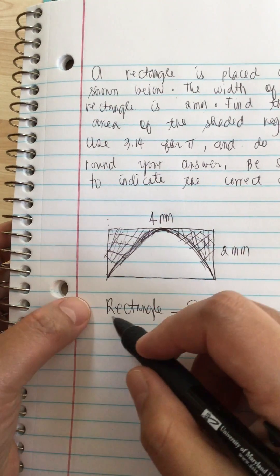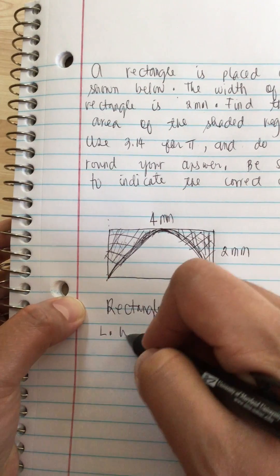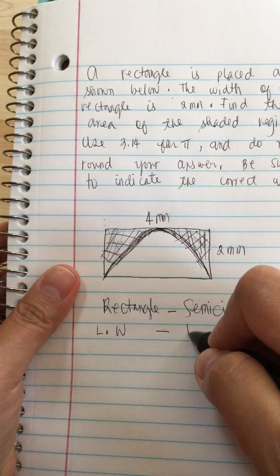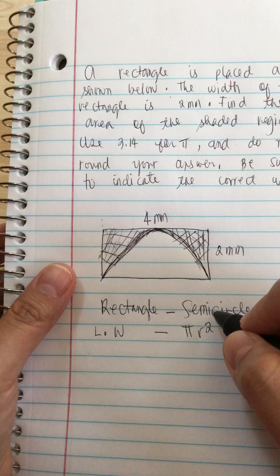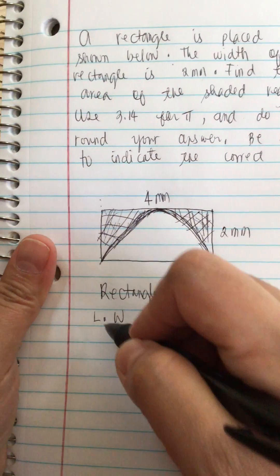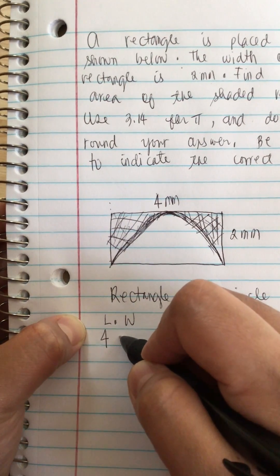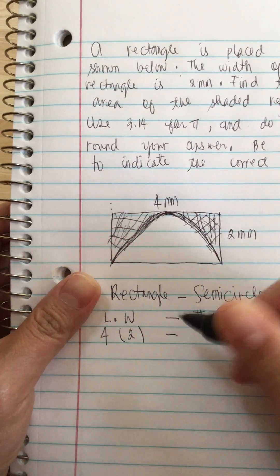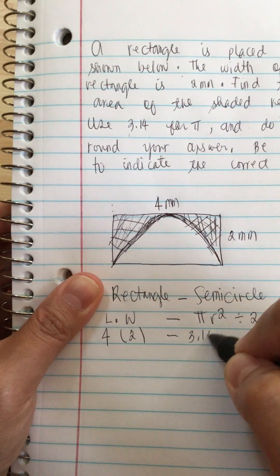So the formula for the area of the rectangle is length times width and circle is pi r squared. Now since it is a semicircle, we have to divide it by 2. So the length is 4 and the width is 2 minus pi. We want us to use 3.14, so we use 3.14.